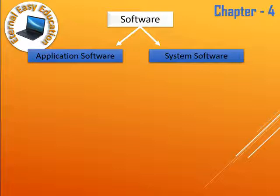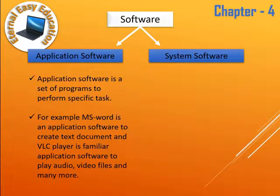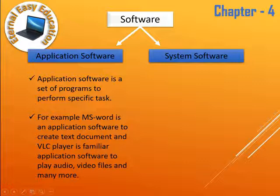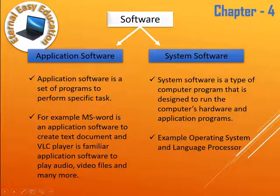Application software is a set of programs to perform specific tasks. For example, MS Word is an application software used to create text documents, and VLC Player is a familiar application software used to play audio and video files. Simply, when you click your Start button, the list of programs available are all said to be application software.